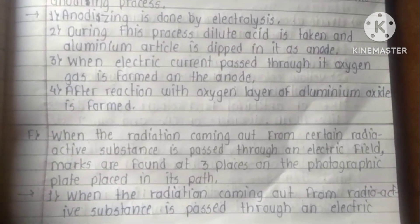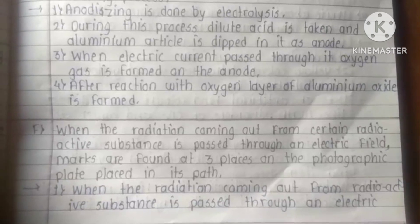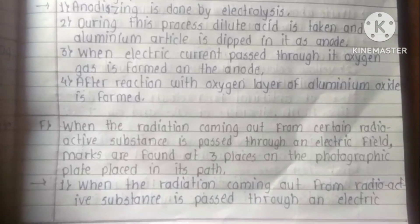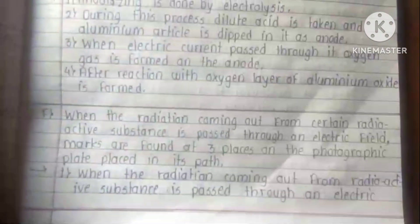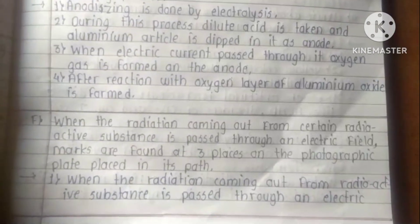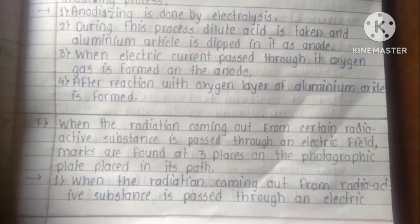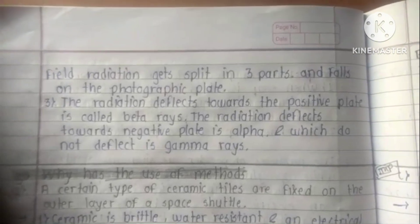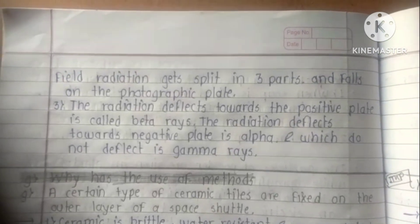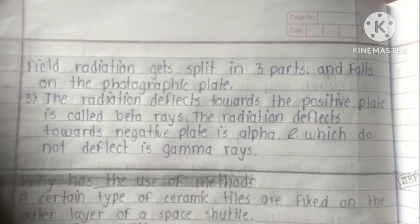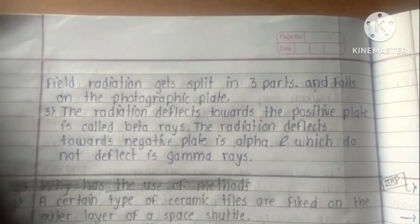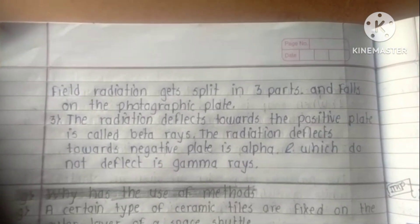When the radiation coming out from a radioactive substance is passed through an electric field, marks are found at three places on the photographic plate placed in its path. The radiation that deflects towards the positive plate is called beta rays. The radiation that deflects towards the negative plate is alpha rays, and the radiation which does not deflect is gamma rays.